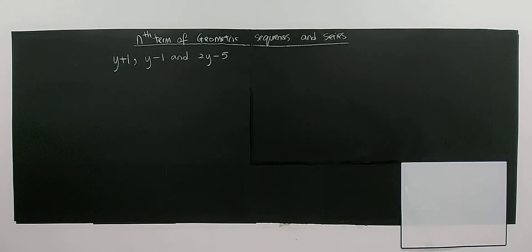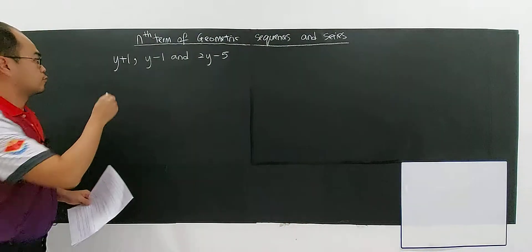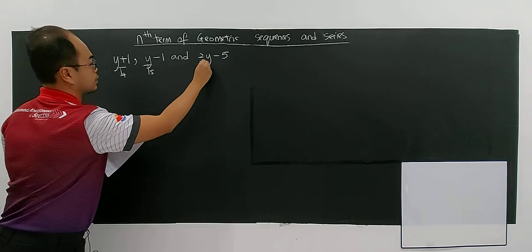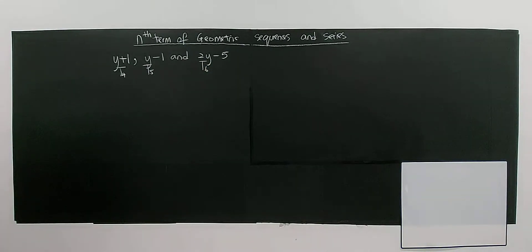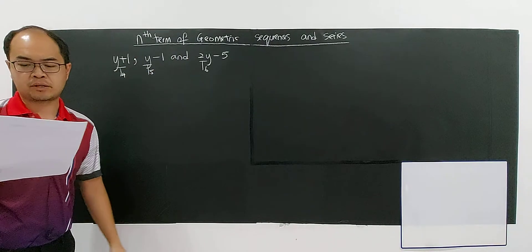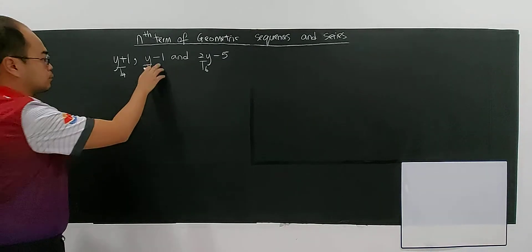Hello. This question gives you the fourth, fifth, and sixth term of a geometric sequence. Be careful — this is not the first term, but this is the fourth term, the fifth term, and the sixth term. So find the possible value of y.